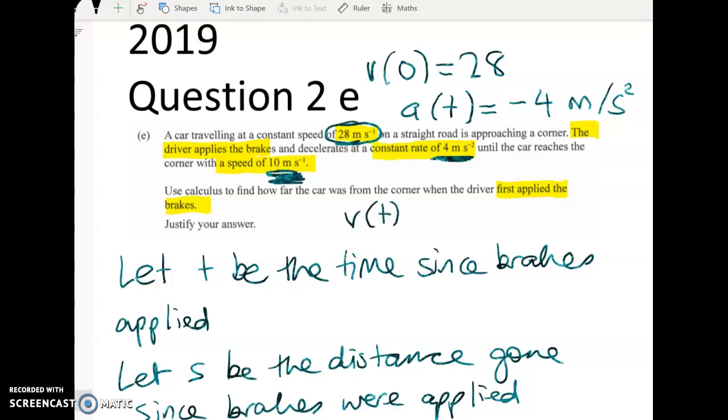What we have to figure out is what is this T. Then we're going to use this time to figure out what is S at that time.